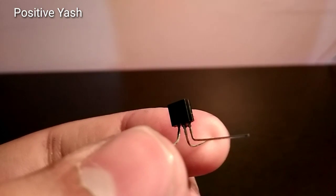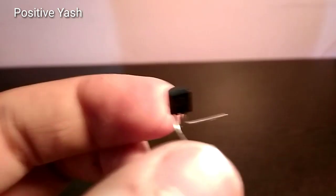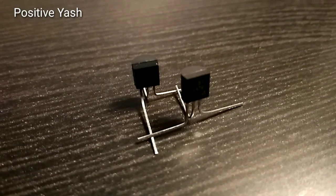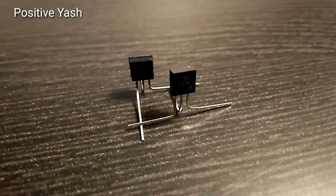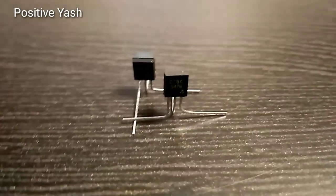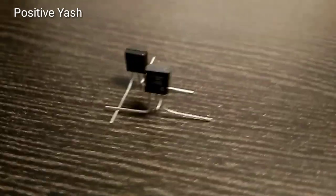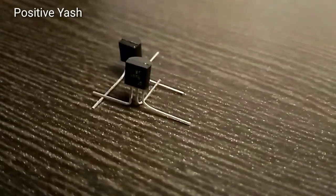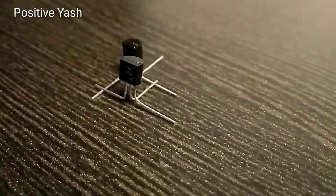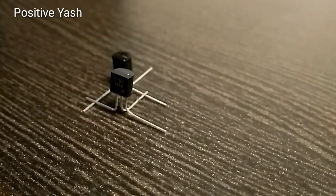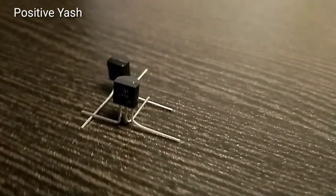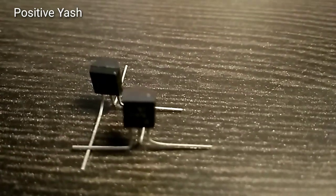Connect the second transistor's base pin to the first transistor's emitter pin, and collector the same. Then solder it like this.